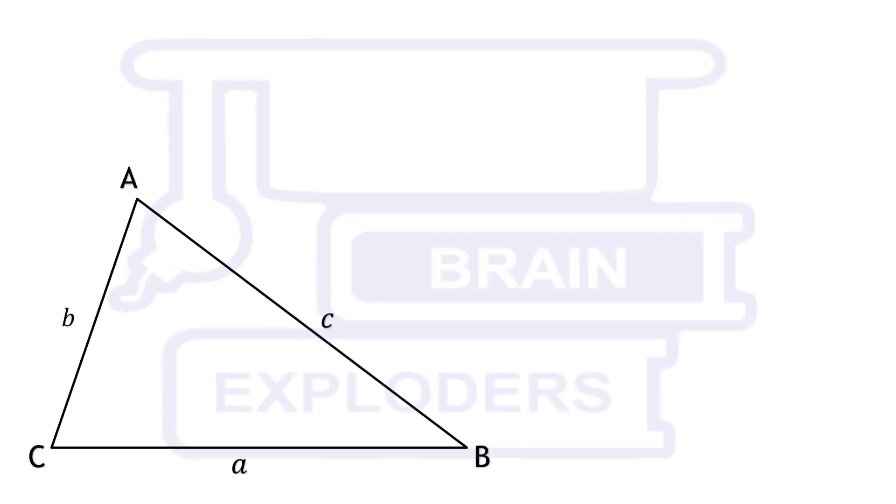In a triangle, if any two sides and angle between them are given, then its area and third side can be calculated. Area of triangle ABC is equal to half AB sin C or half BC sin A or half CA sin B.